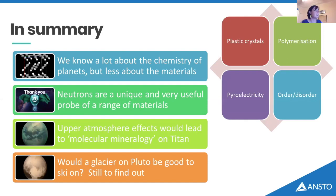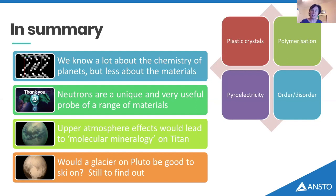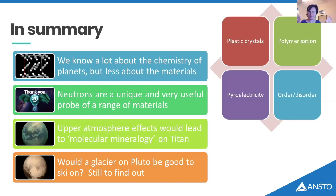I want to briefly mention methane — its properties are very similar but the phase transition is a little bit too cold to be relevant for Pluto. So just to summarize: hopefully you've all learned that we know a lot about the chemistry of these smaller planets but less about the materials, and that's kind of one of the big areas of work I'm trying to do. Hopefully you're now convinced that neutrons are a unique and very useful probe for this. I've talked a bit about how upper atmosphere effects lead to a very rich mineralogy on the surface of Titan, and about the unique physical properties that only occur in these small molecules — things that wouldn't happen in Earth minerals and are a big topic we're trying to investigate.